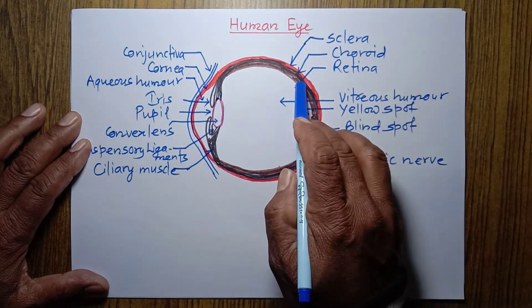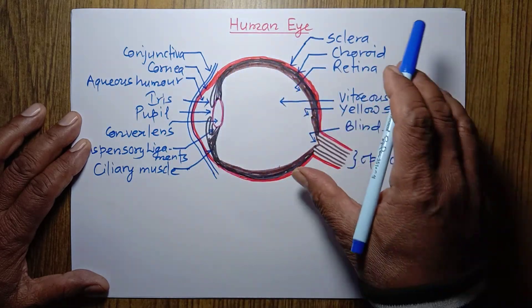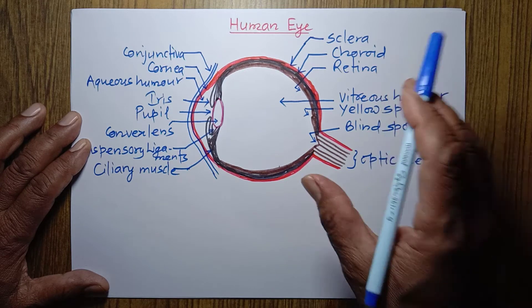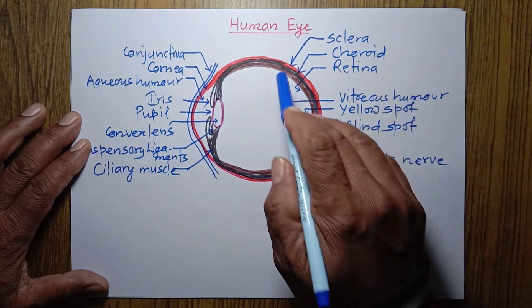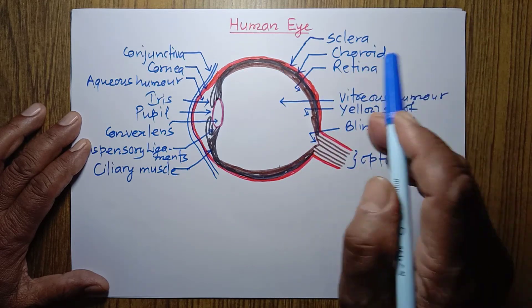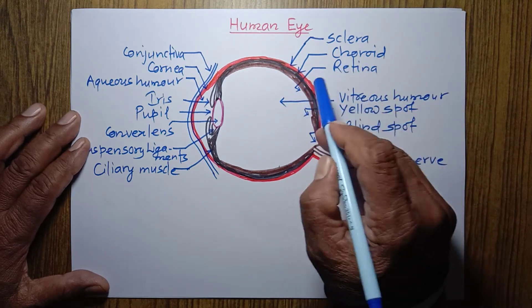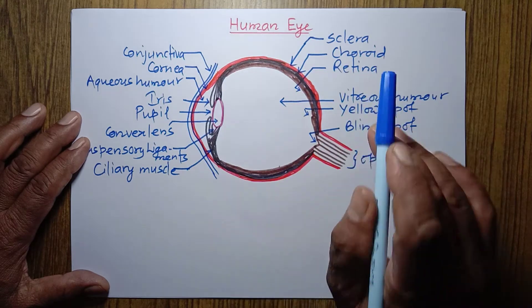Choroid coat — the middle layer of our eyeball is called choroid coat, or choroid. It is richly supplied with blood vessels, which supply oxygen and food substances to the eye cells.